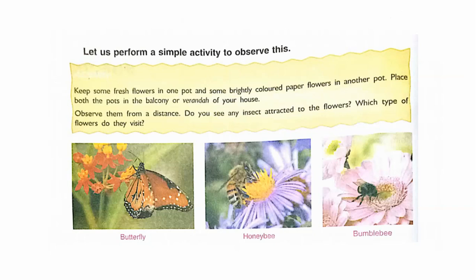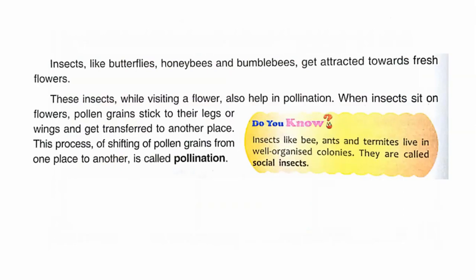Here you can see pictures of a butterfly, honeybee, and bumblebee. Insects like butterflies, honeybees, and bumblebees get attracted towards fresh flowers; these insects make sounds while flying. When insects sit on flowers, pollen grains stick to their legs or wings and get transferred from one place to another.